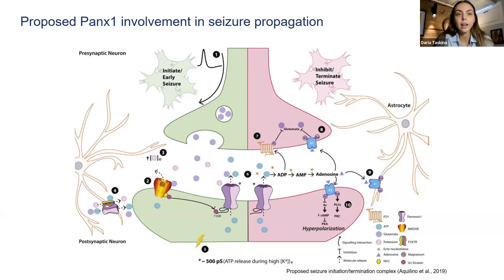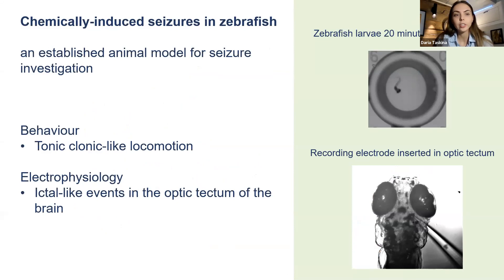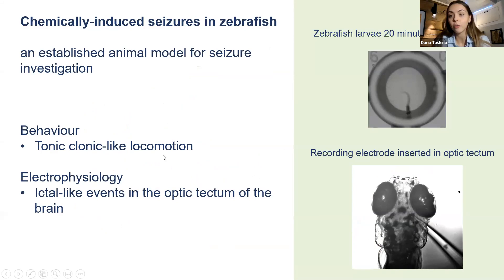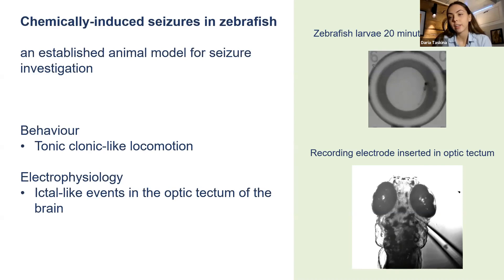We've done that in zebrafish. Zebrafish have been a very well established animal model for seizure investigations, done by chemically inducing seizures. They show behavior that is tonic and clonic-like locomotion — this involuntary jerking movement followed by loss of balance. It's quite a widespread phenomenon seen in larvae and adult zebrafish when you induce seizures. There's also electrophysiology evidence of ictal-like events in their brain when you chemically induce seizures.